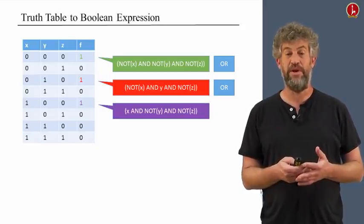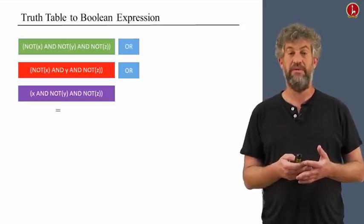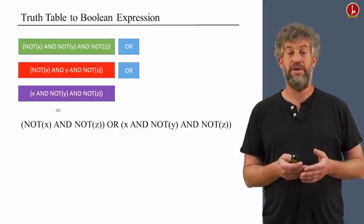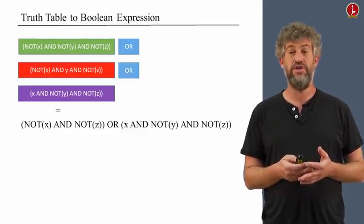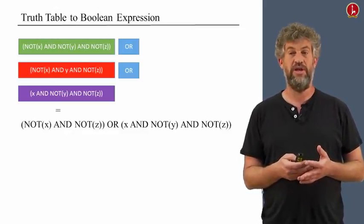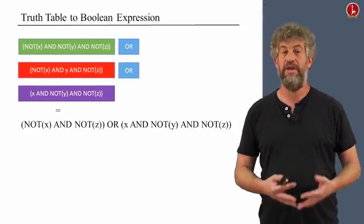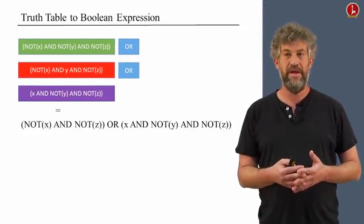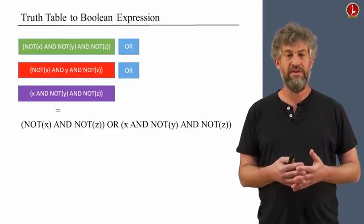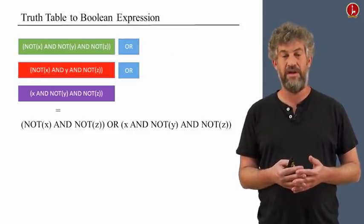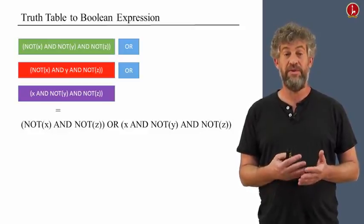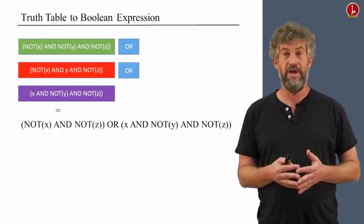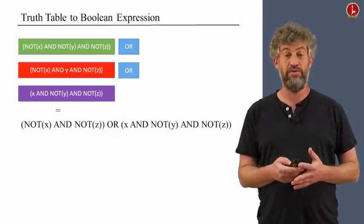And now we've basically constructed our function as a Boolean expression, only using ands, nots, and ors. Now, of course, once we have this expression, we can start manipulating it in many ways. This is one way to write the function as an expression. But if you actually look at it, you can see that we can start changing its format. For example, if you look at the first two clauses, you can see that one of them is not x and not y and not z, while the other is not x and y and not z.